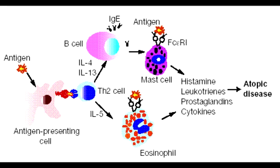Give some examples of Type 1 Hypersensitivity Reaction. Type 1 Hypersensitivity Reaction includes asthma, hives, drug allergies, and food allergies.